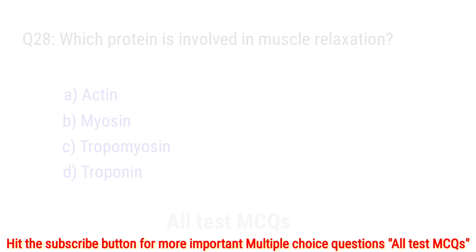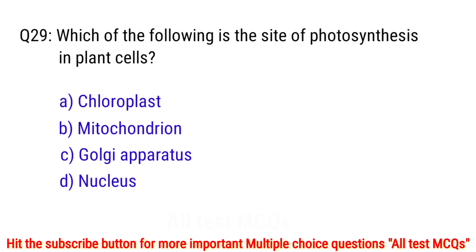Question number 29. Which of the following is the site of photosynthesis in plant cells? The right answer is option A: chloroplast.